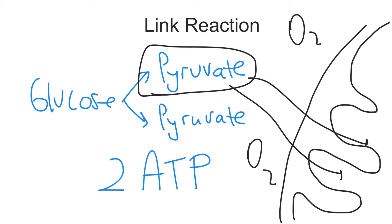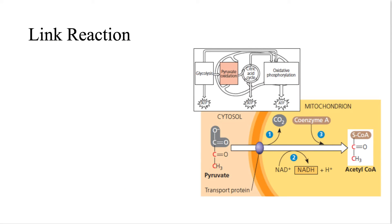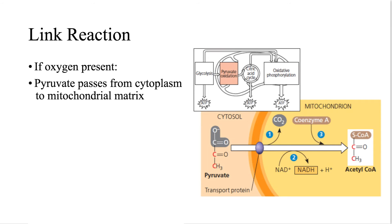The link reaction connects the pyruvate molecule to the aerobic respiration reactions in the mitochondria. Let's check out the features of the link reaction. Link reaction takes place if only molecular oxygen is present. So the pyruvate, the end product of glycolysis, will follow aerobic pathway rather than anaerobic. The pyruvate passes from the cytoplasm to the mitochondrial matrix by active transport.